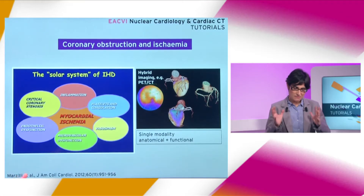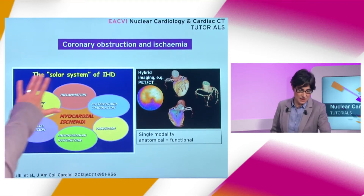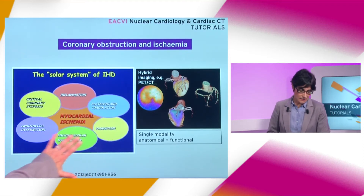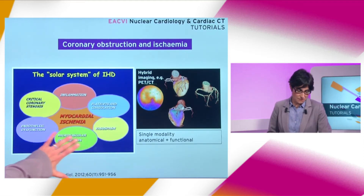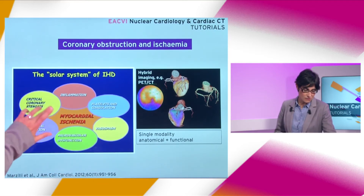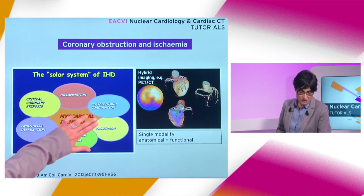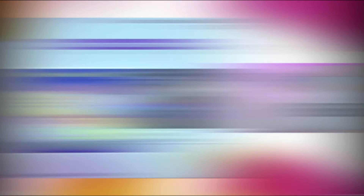In coronary artery disease we have two important aspects: coronary artery obstruction and ischemia. In ischemic heart disease, if myocardial ischemia can be depicted as the center of this solar system, you can see that critical coronary stenosis is just one of the aspects around it, and it can be associated with a range of other reasons.